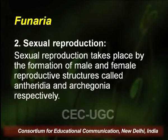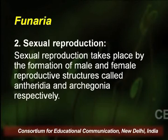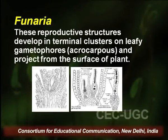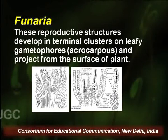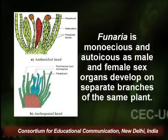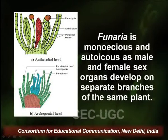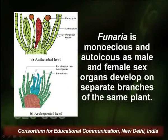Now let us discuss the sexual reproductive aspect of Funaria's life cycle. Sexual reproduction takes place by formation of male and female reproductive structures called Antheridia and Archegonia respectively. These reproductive structures develop in terminal clusters on leafy gametophores in an acrocarpous fashion. Funaria is mostly monoecious with an exception of one or two species, and they are autoicous as male and female sex organs develop on separate branches of the same plant.